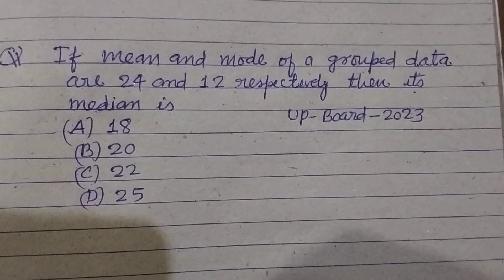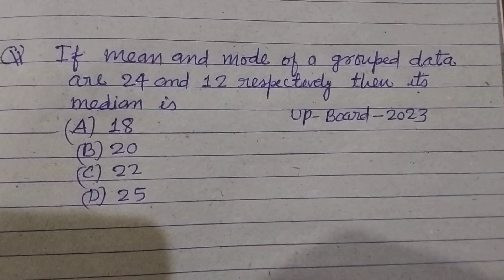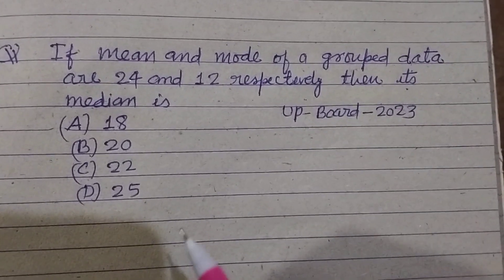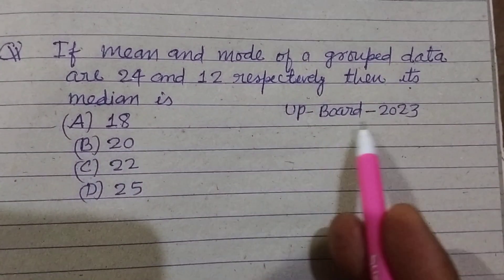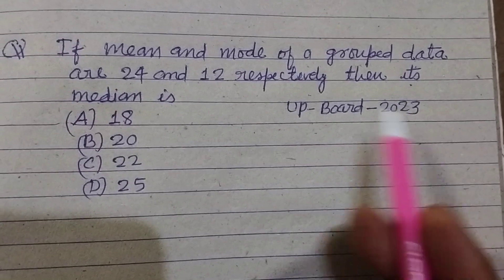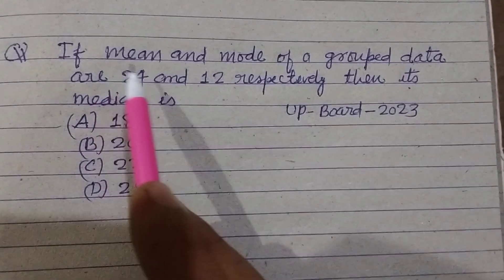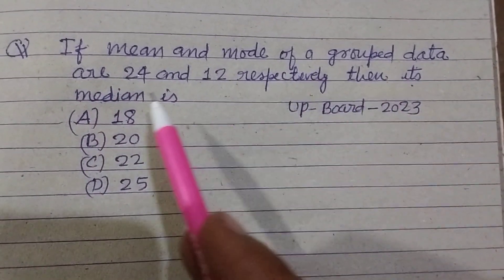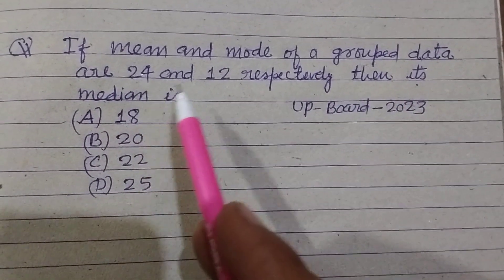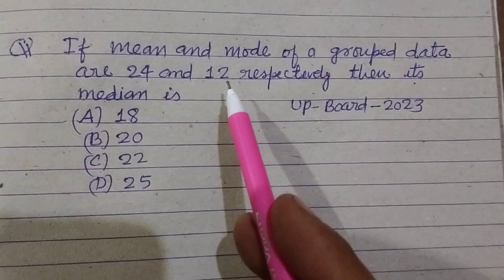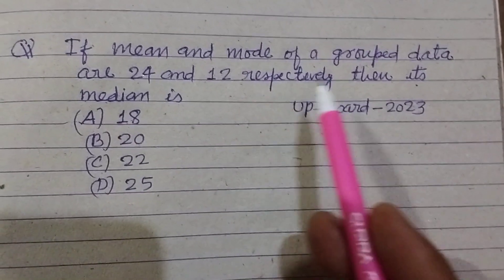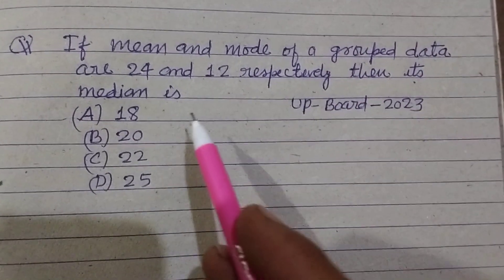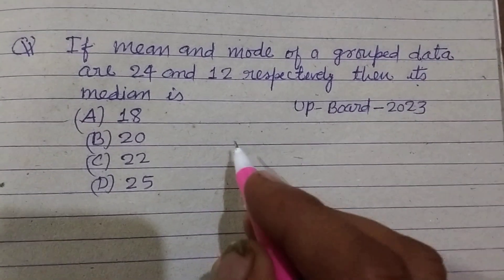Hello students, warm welcome in this YouTube channel. The question from UP People 2023 is: if the mean and mode of a grouped data are 24 and 12 respectively, then its median is?